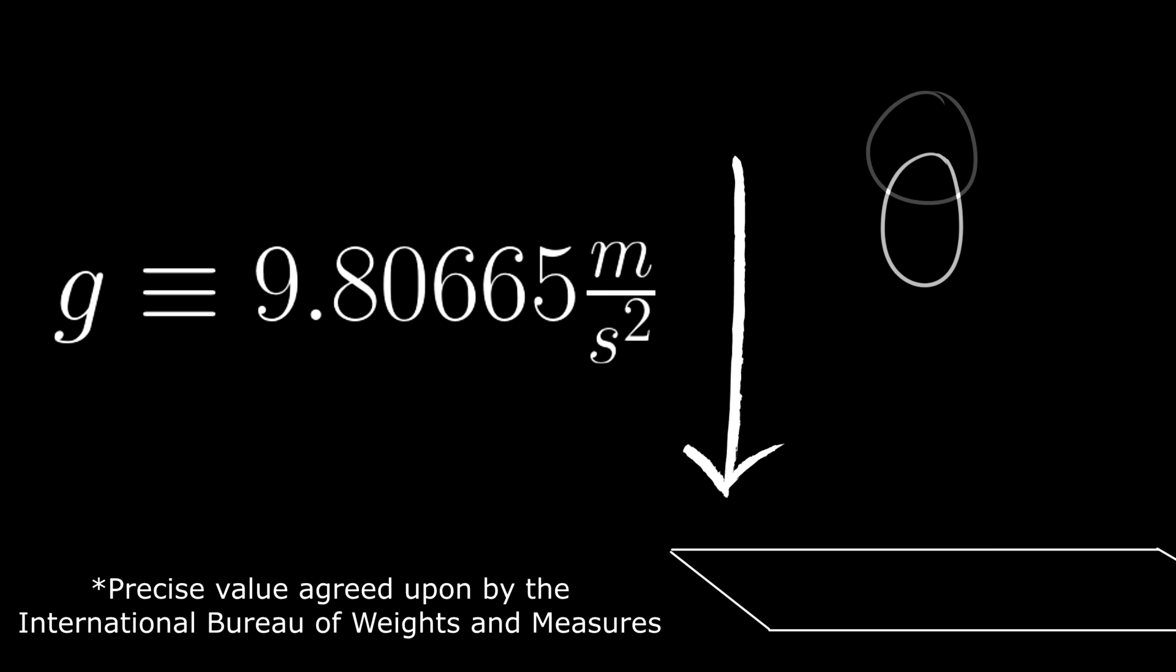We all know the Earth's surface acceleration, little g, is approximately 9.81 meters per second squared.